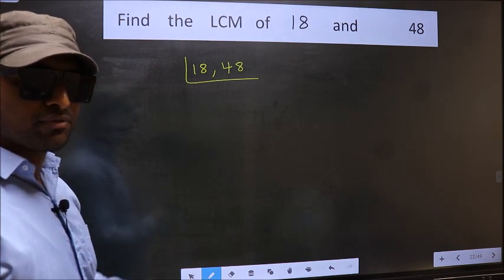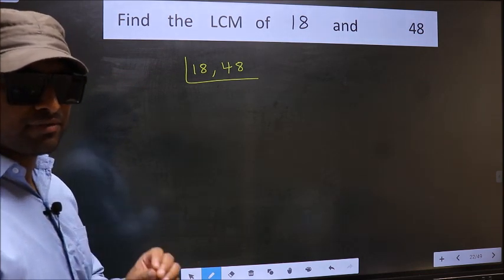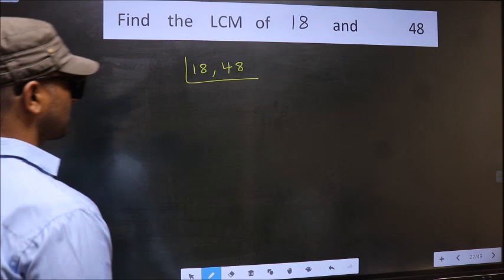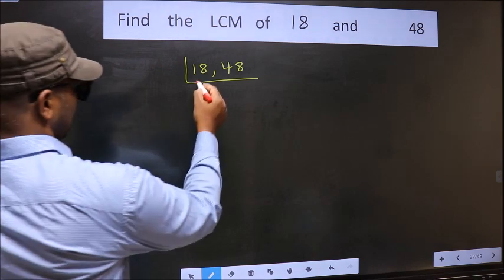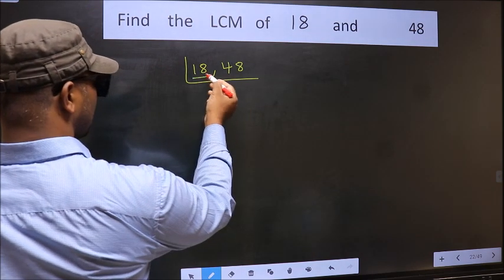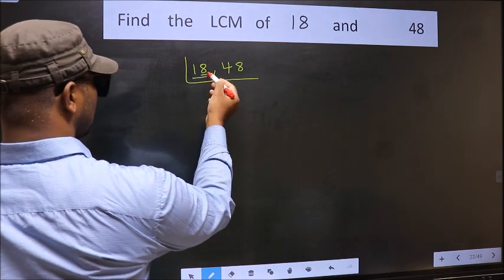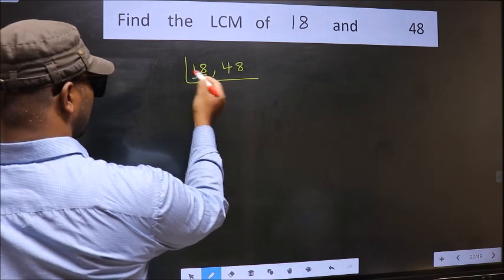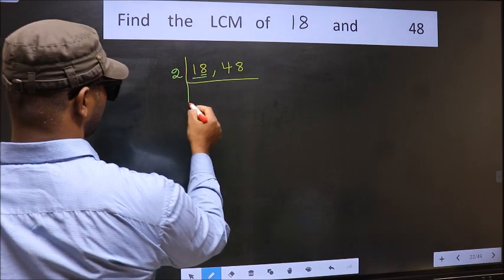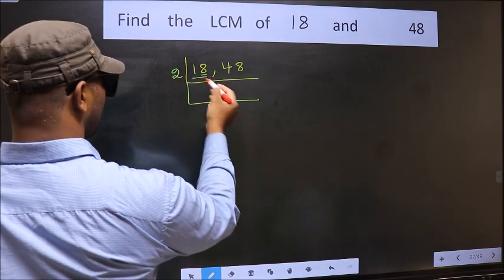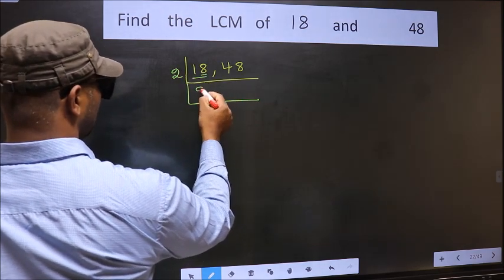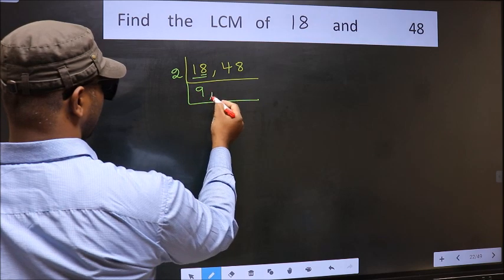Now you should focus onto the first number which is 18 here. In this number the last digit 8 is even, so take 2. When do we get 18 in the 2 table? 2 nines 18.